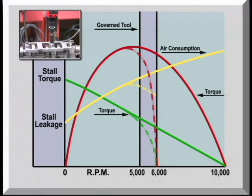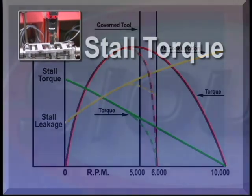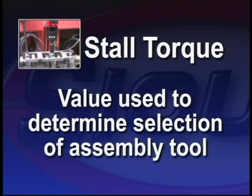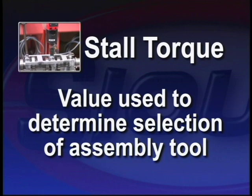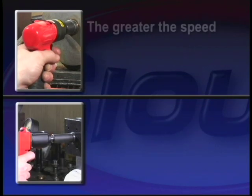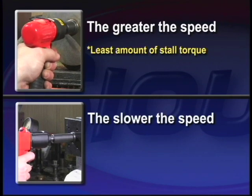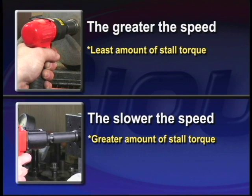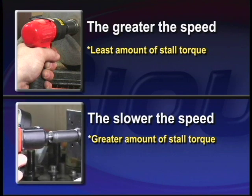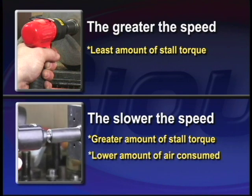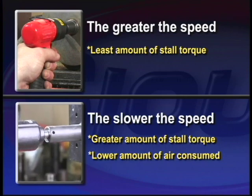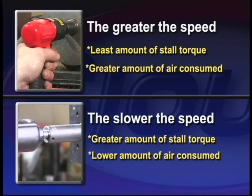The torque required to stall the motor is called stall torque. This value is used to determine the selection of an assembly tool for fastening a screw, nut or bolt. The greater the speed, the least amount of stall torque. The slower the speed, the greater amount of stall torque. The slower the tool, the lower the amount of air consumed. The higher the speed, the greater amount of air consumed.